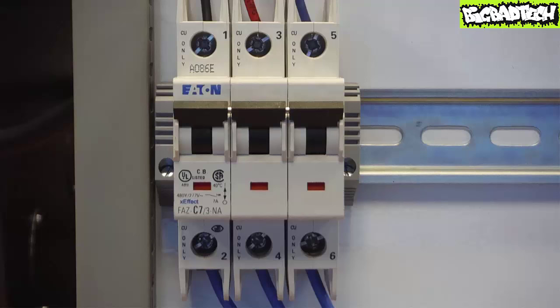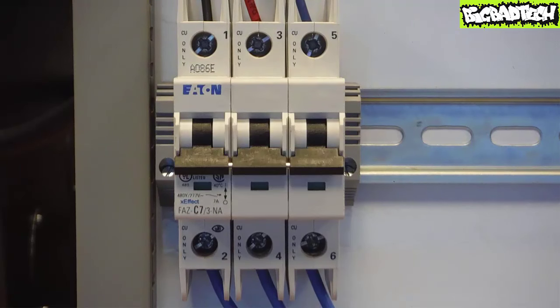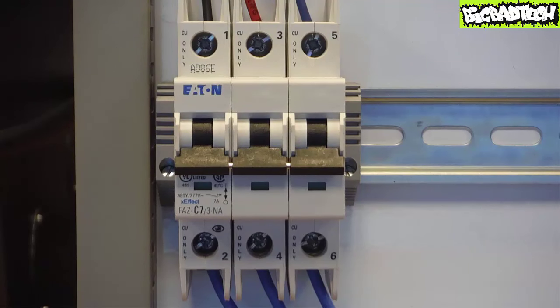Ordinarily the closure of this contactor would be a bad idea under full sail. However the moment the phase-to-phase event occurs the circuit breaker recognizes the high current event and opens up to save the day.